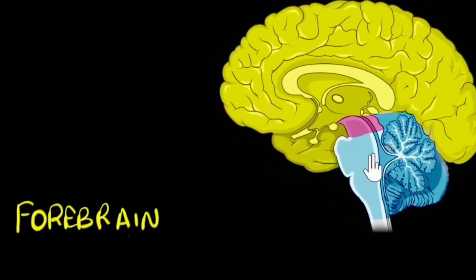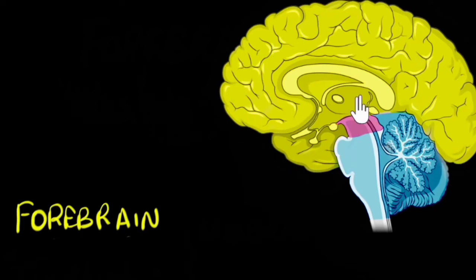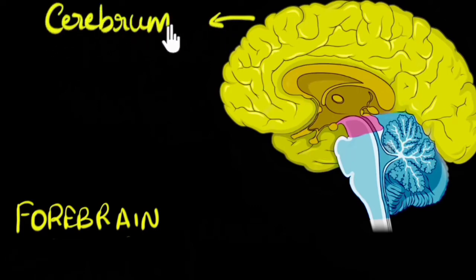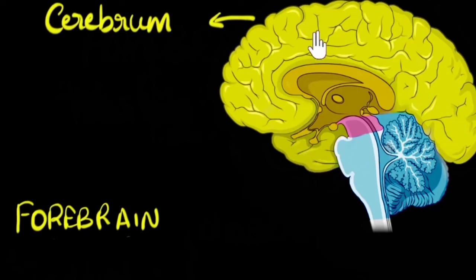Let's start with the forebrain. If you look at the forebrain, you can see two sections: the outer section, which contains a lot of folds, and the inner section. Let me shade that inner section a little darker so we can identify it. So the outer section — this big giant outer section colored in light yellow — is called the cerebrum. We're not going to look at further parts of that, so that's the outer section for us.